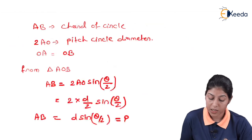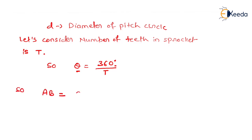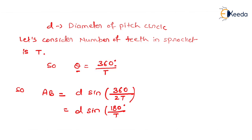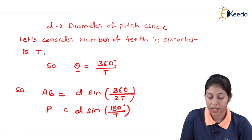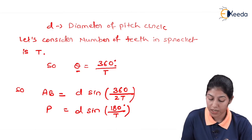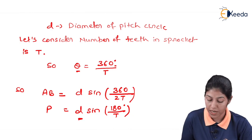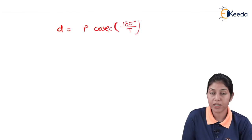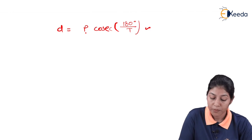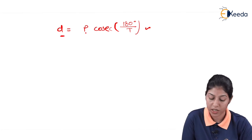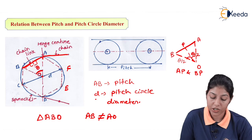Substituting theta = 360/T into the pitch equation — theta by 2 becomes 180/T — we get: Pitch P = D·sin(180/T). Rearranging, the pitch circle diameter D = P / sin(180/T). So we can define the pitch circle diameter in terms of pitch of the chain as D = P / sin(180/T). This equation will be used to solve numericals related to chain drive. This is the relation between pitch and pitch circle diameter.